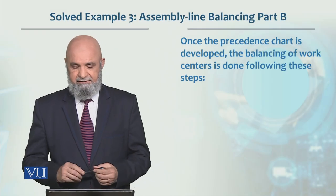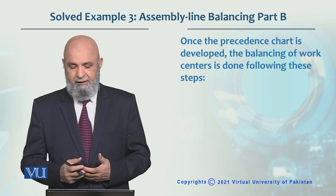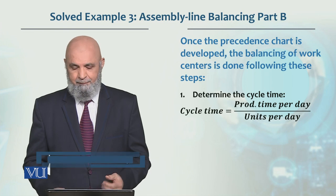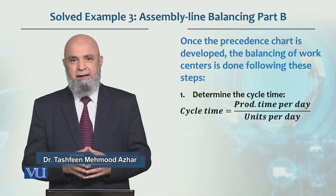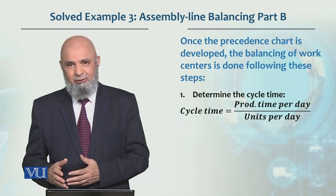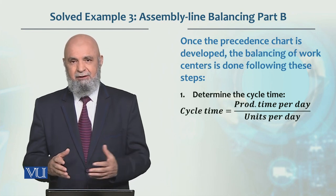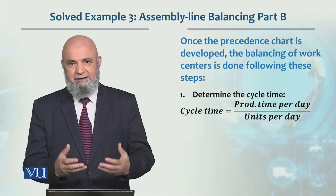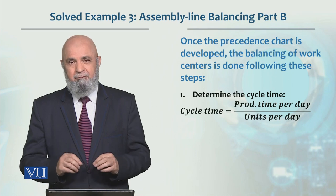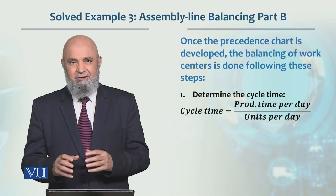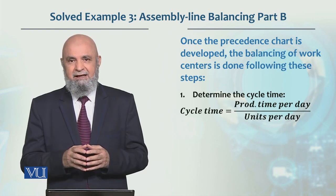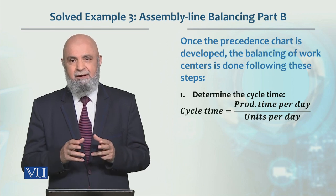Once the precedence chart is developed, to balance the work center we follow these steps. Step one is to determine the cycle time. Cycle time is calculated as total time available per day — if one 8-hour shift, that means 480 minutes (8 multiplied by 60) — divided by total number of units required per day. That gives us the cycle time. In assembly line balancing, cycle time is defined as the time between two successive units coming off the line.